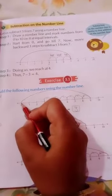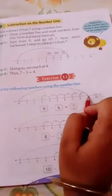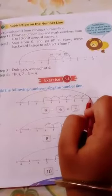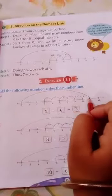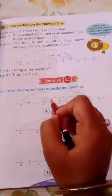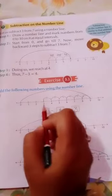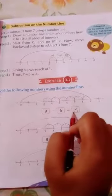So children, see how do we start? Start with 9. Now what do we have to do? We have to do minus 6: 1, 2, 3, 4, 5, 6. So this is your answer, 3.